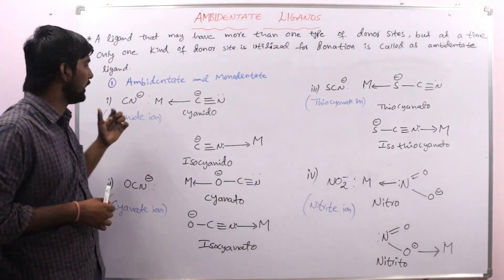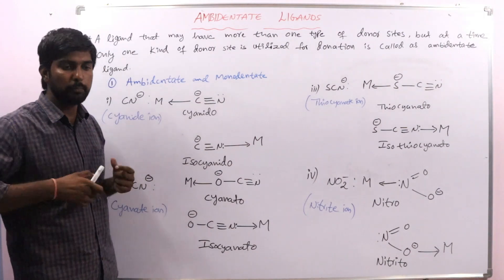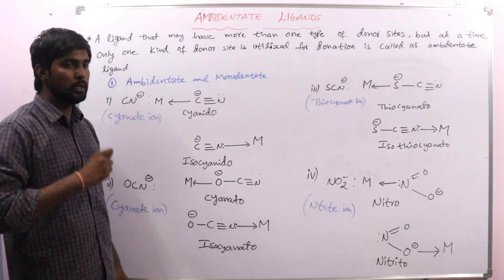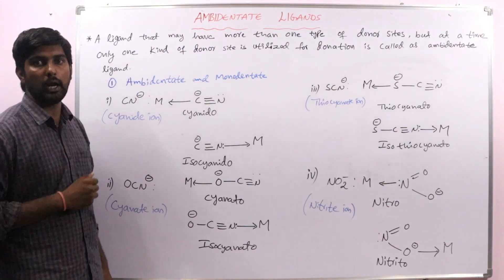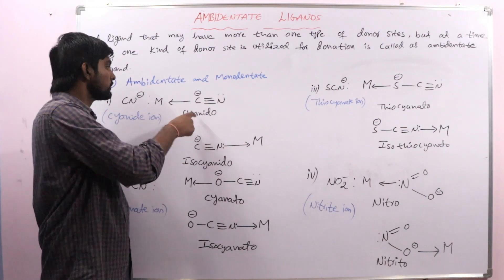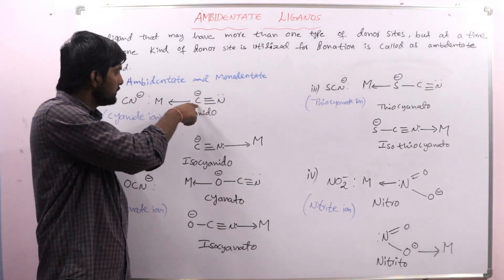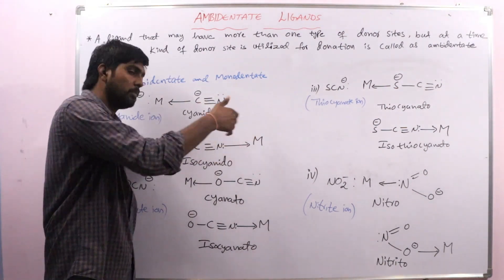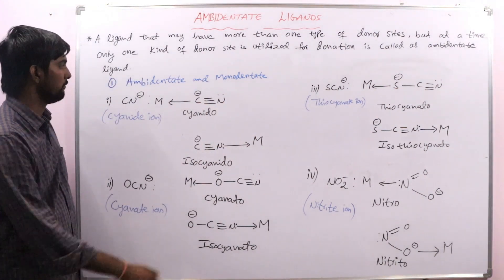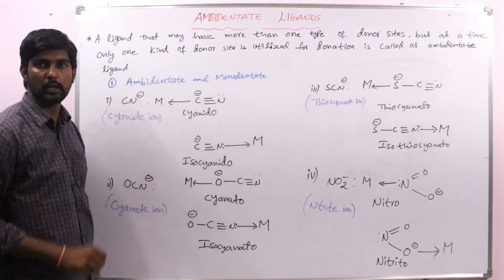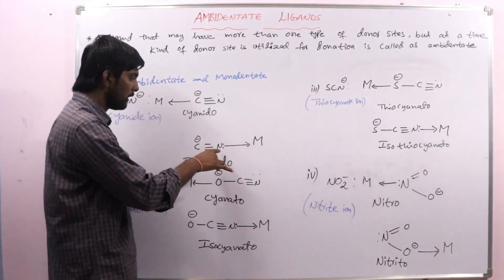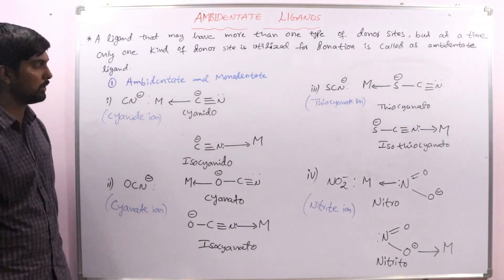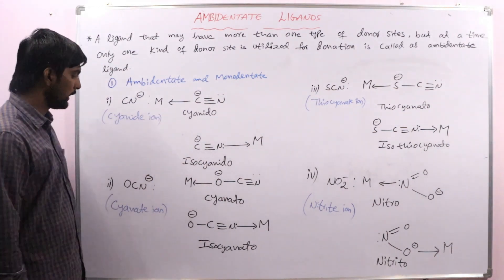So, ambidentate ligand means the ligand which has more than one type of donor atom, but at a time it can donate through only one single donor atom. Carbon is forming bond with the central metal atom in one case; nitrogen is forming bond in another case. When carbon is involved in bonding, nitrogen does not form any bond.